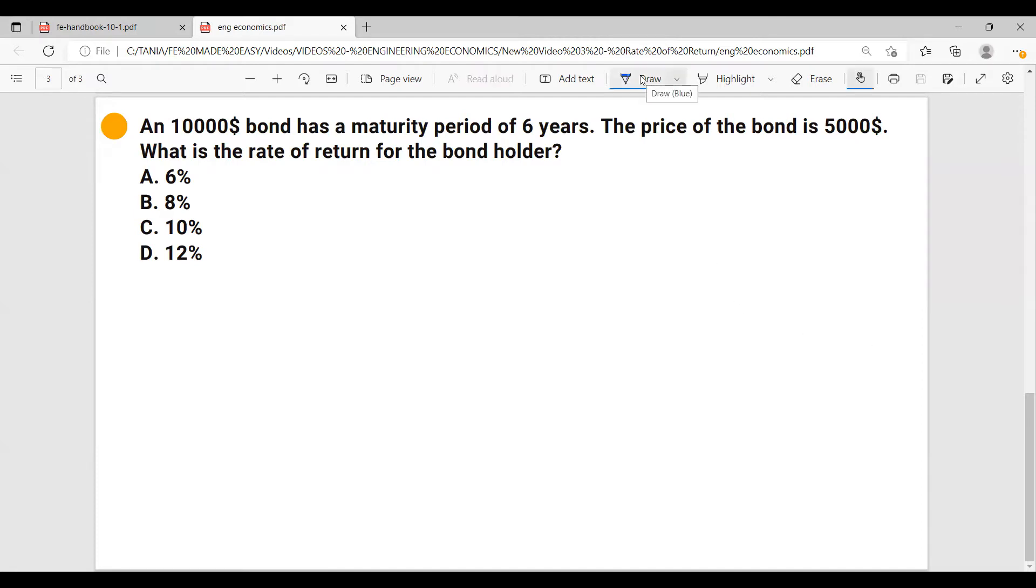We're given a future amount of money, which is $10,000. We're given a present amount of money, which is $5,000. And we're given the number of years. The bond will mature, which is six.